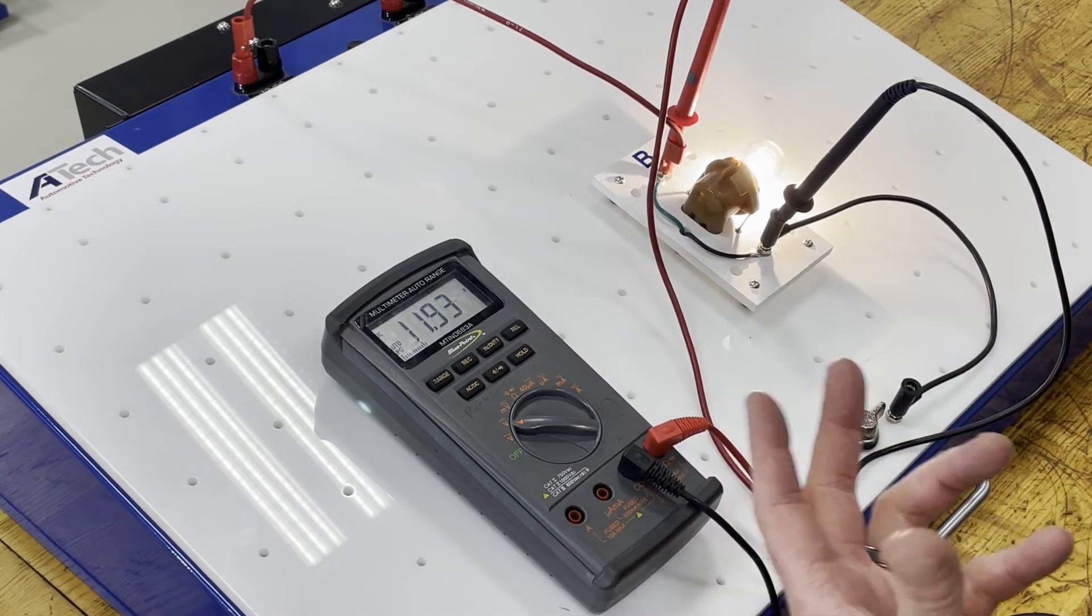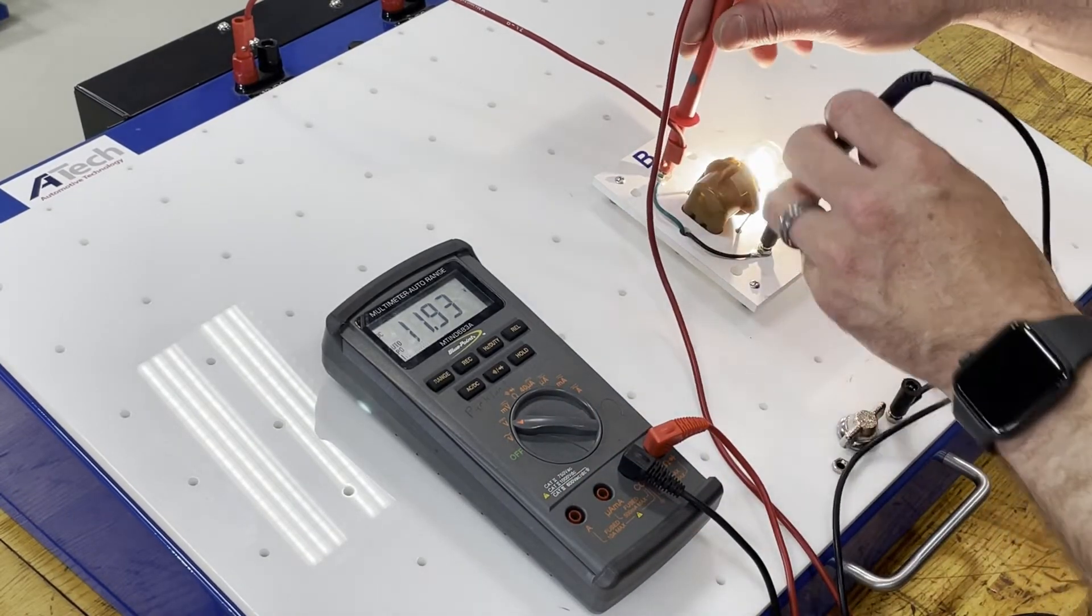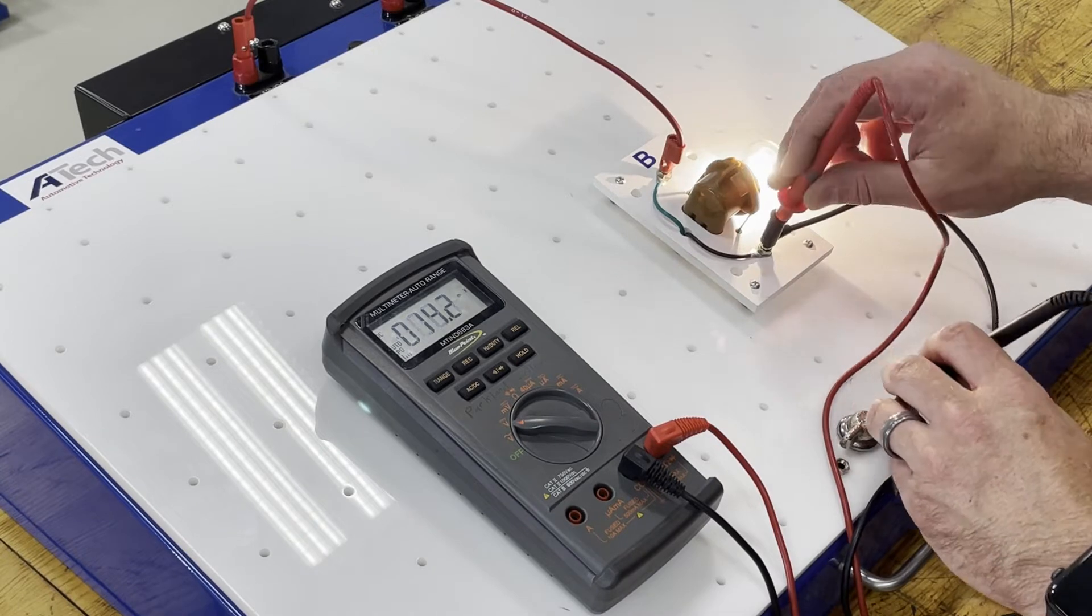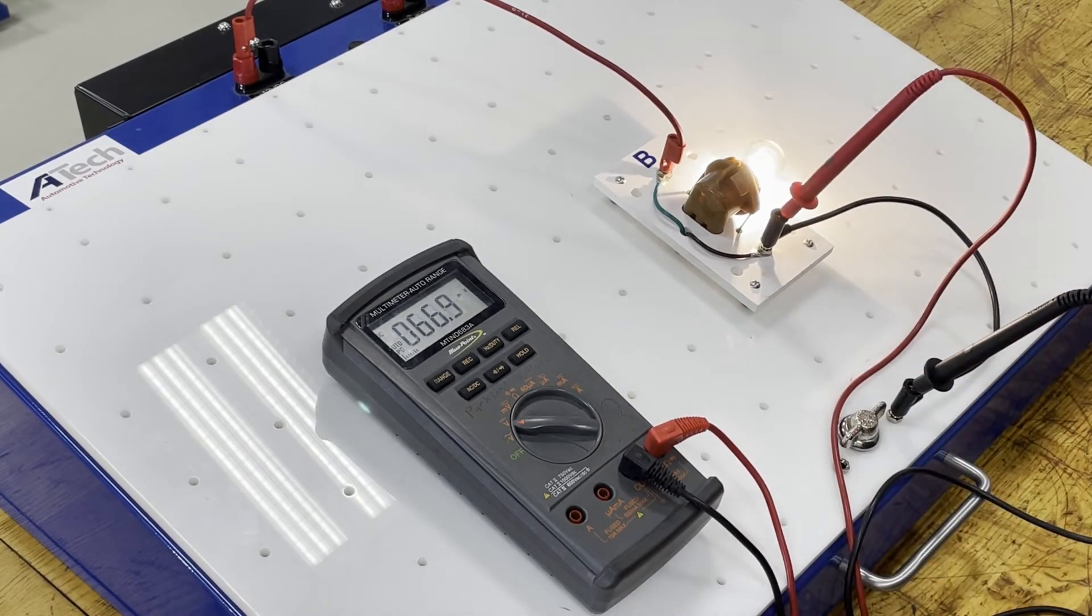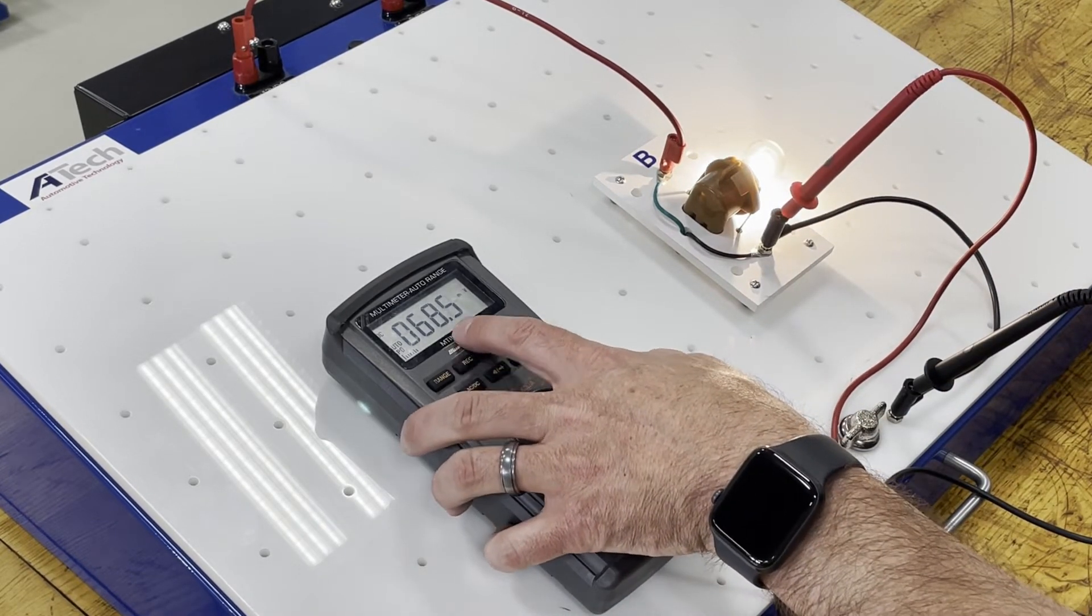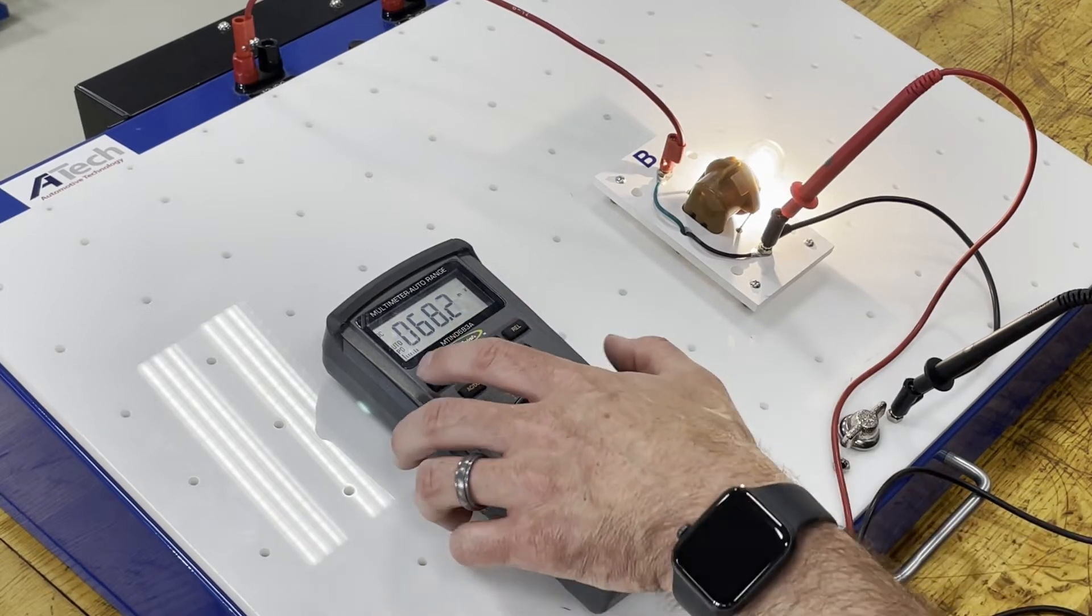So here we see I've got 11.93 volts being dropped by this light bulb. We saw that there was 12.02 available to it and so if I continued this and did a volt drop test on say my ground connection here.